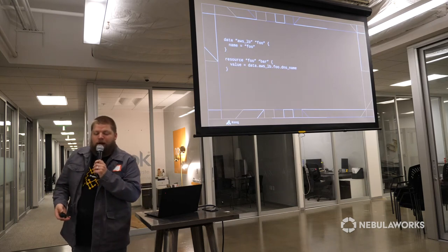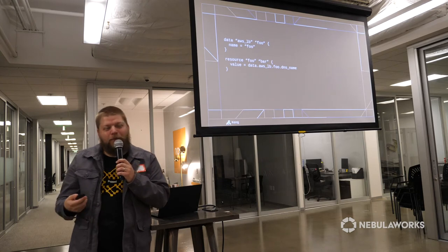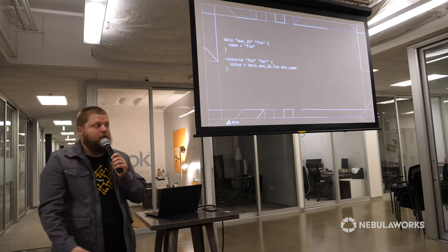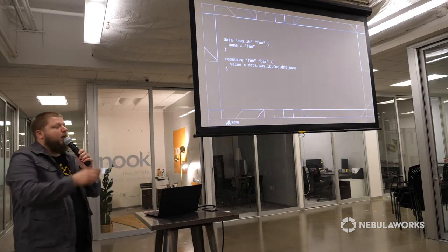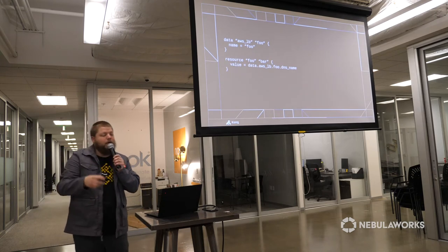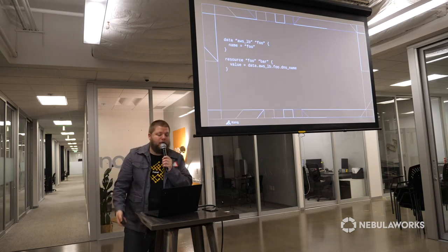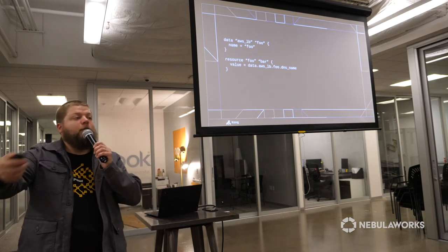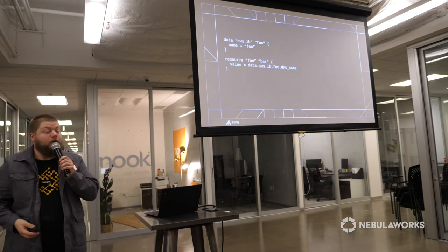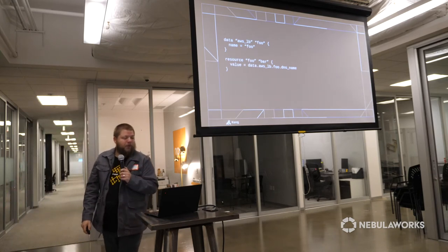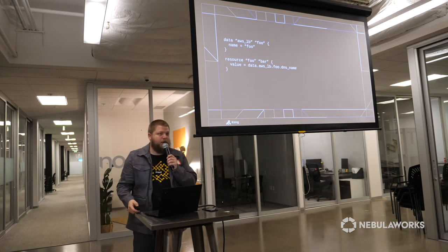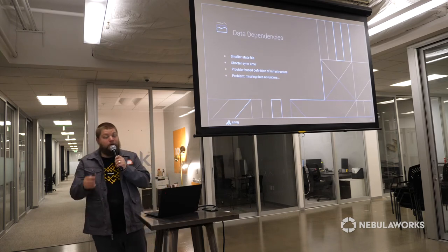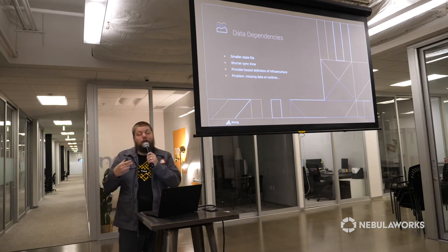What we think is the standard way to do this is using soft dependencies — Terraform data references. In addition to defining resources Terraform creates through the provider's API, data references load information about an existing resource and make that data available inside the Terraform lifecycle. We have a data block to load data about an AWS ALB — akin to calling describe-lb in the AWS CLI. This lets us keep our definitions in independent Terraform states, which keeps state files smaller, meaning things are less likely to break and take a lot less time.